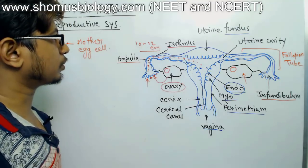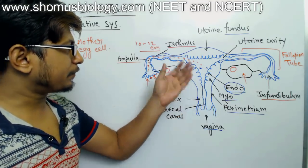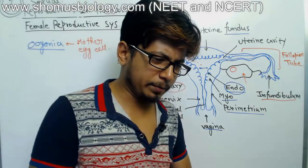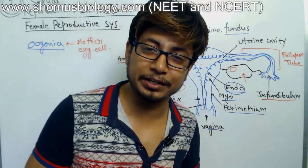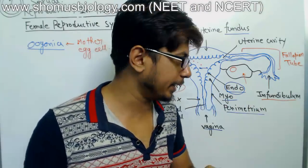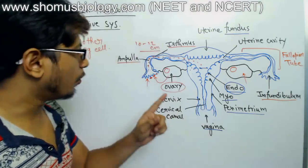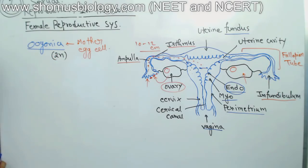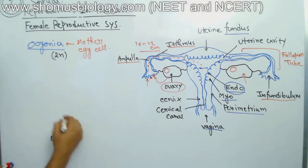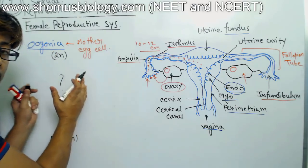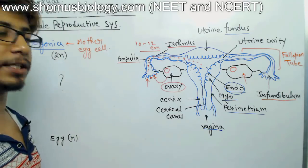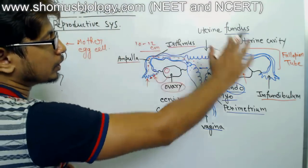Inside the ovary, the mother egg cell undergoes sequential modification through rounds of both mitosis and meiosis to produce a haploid egg. The mother oogonium is a diploid cell with 2n chromosomes, while the mature egg is a haploid cell with n chromosomes. This process of maturation and production of the egg from oogonium is known as oogenesis.